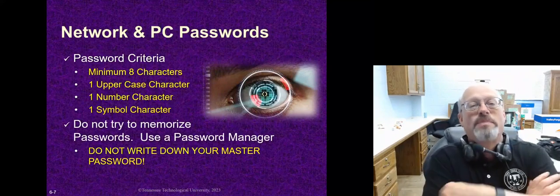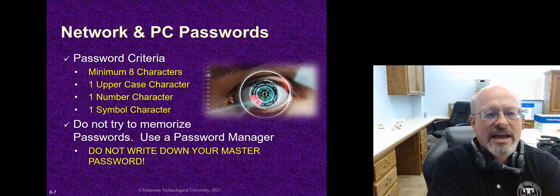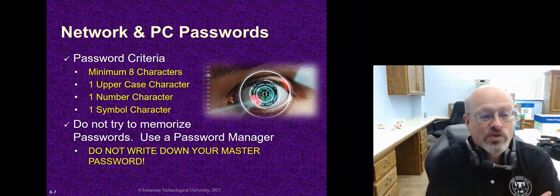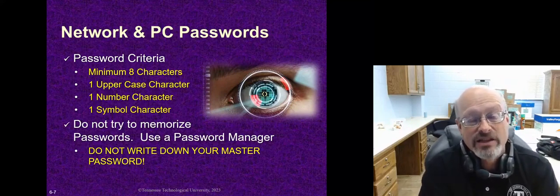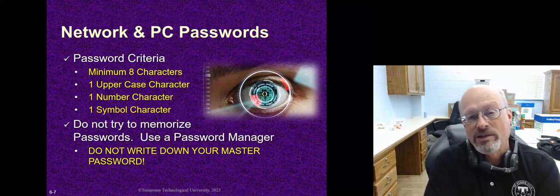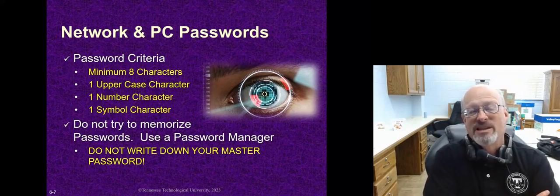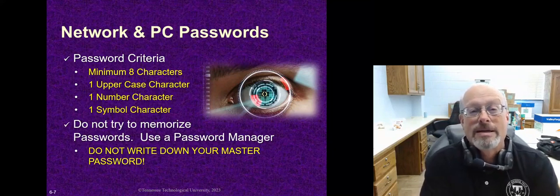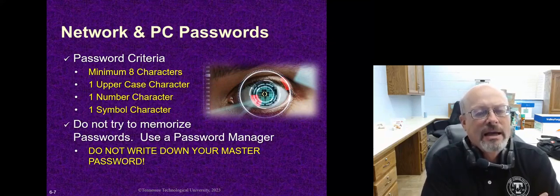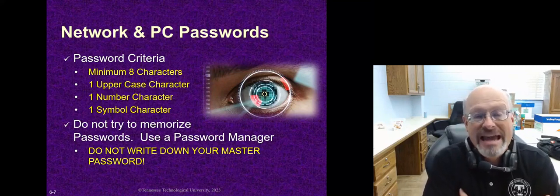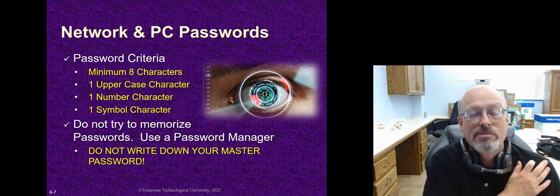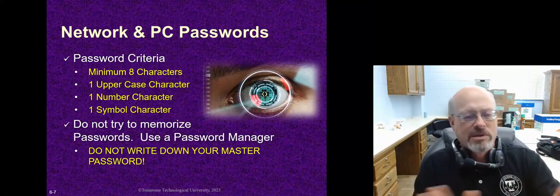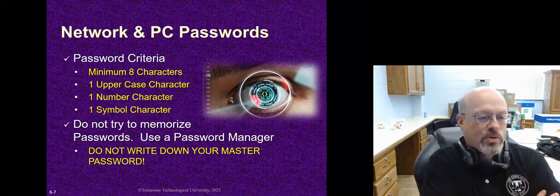We've been told for years that any kind of network access or PC access needs a password. A password is used to keep somebody else from accessing the computer or the network. The password needs to be something only you know, but also something that someone else can't easily guess. With new artificial intelligence, if you pick simple passwords, the AI will pick it up pretty quickly. The criteria we use: a minimum of eight characters, one uppercase character, one number character, and one symbol character — though some symbols are allowed and some aren't.